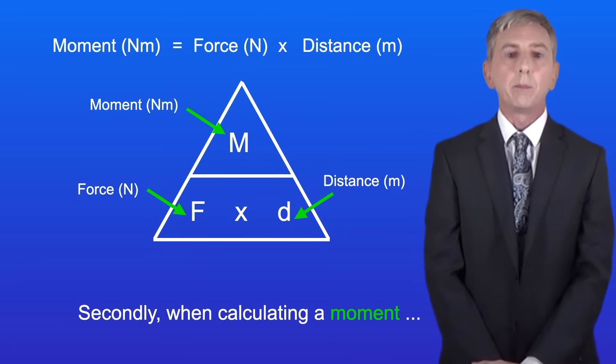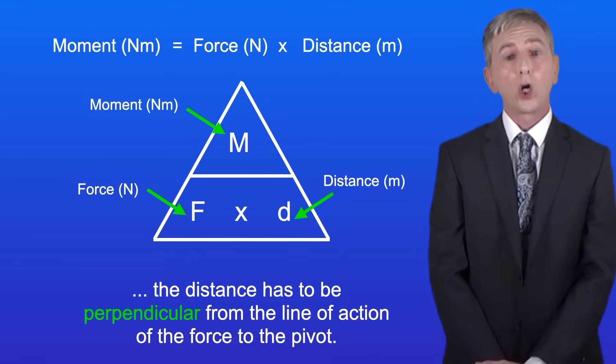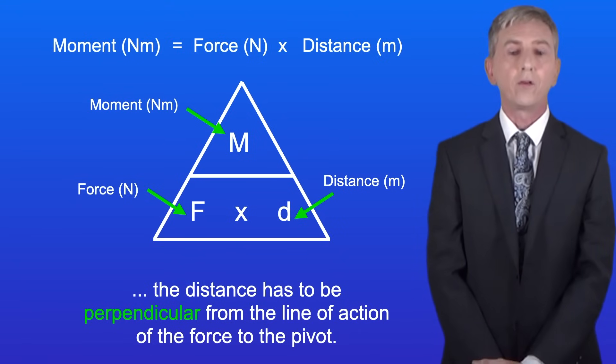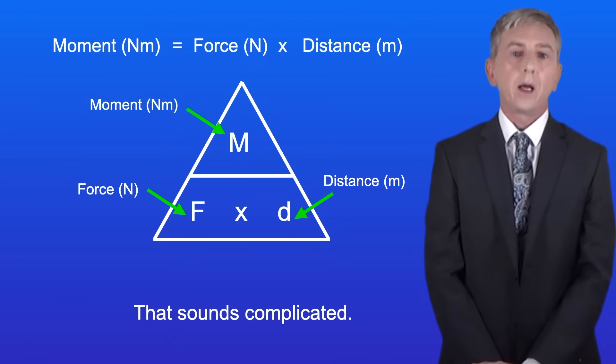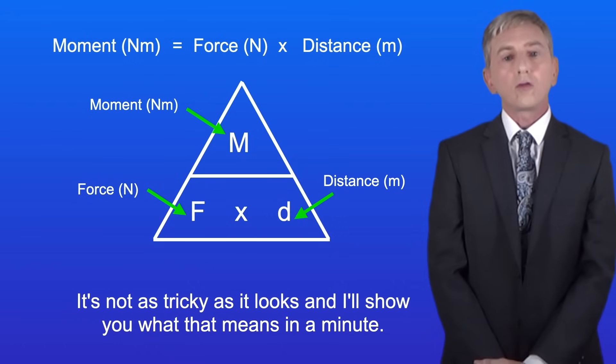Secondly when calculating a moment the distance has to be perpendicular from the line of action of the force to the pivot. Now that sounds complicated but it's not as tricky as it looks and I'll show you what that means in a minute.